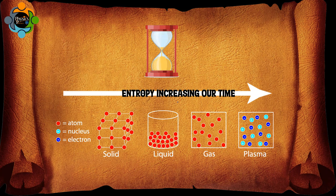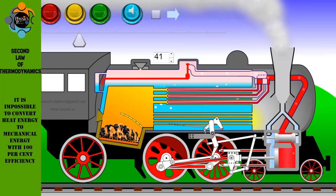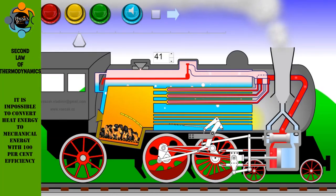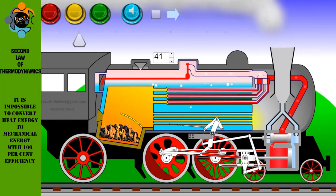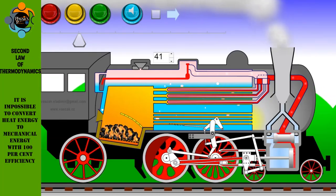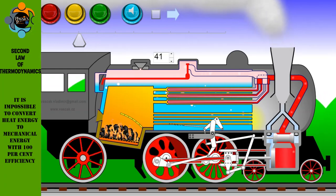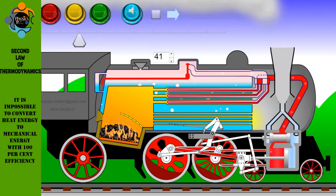This implies that over time the degree of disorder in any system will always increase. In simple words, the law explains that an isolated system's entropy will never decrease over time. The second law also clearly explains that it is impossible to convert heat energy to mechanical energy with 100% efficiency.